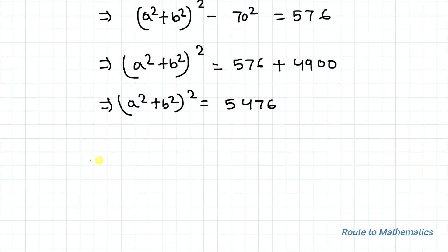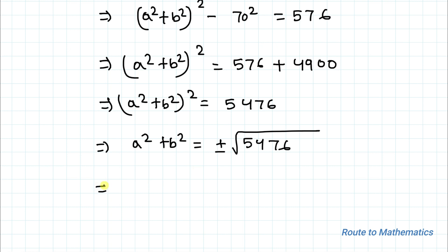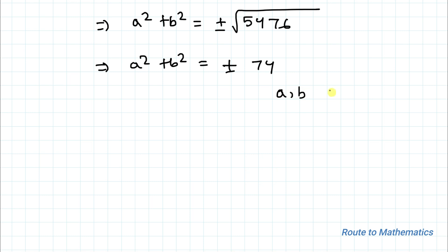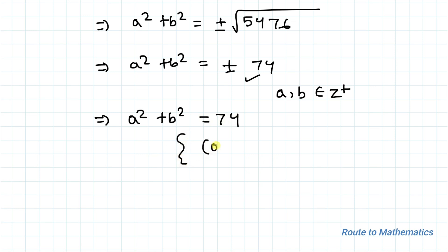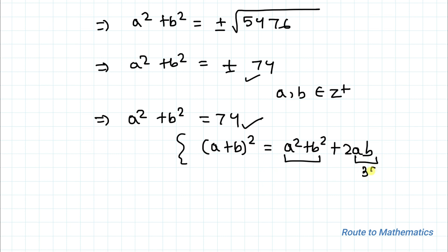Taking the square root of both sides, we have a²+b² equals plus or minus 74. Since a and b are both positive integers, the negative value is discarded. So a²+b² equals 74. We know that (a+b)² equals a²+b² plus 2ab, where a²+b² equals 74 and ab equals 35 from equation 2.